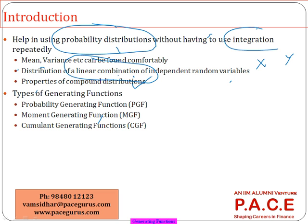Compound distributions are dealt with heavily in the next chapter, and the chapter after that covers further applications. The current chapter is primarily focusing on how to generate these three kinds of functions: the probability generating function, the moment generating function, and the cumulant generating function.